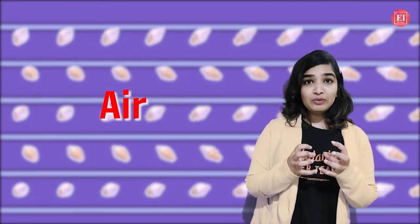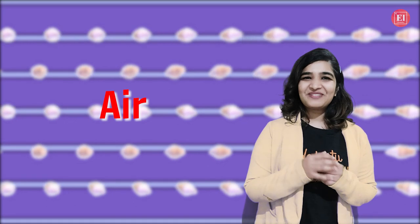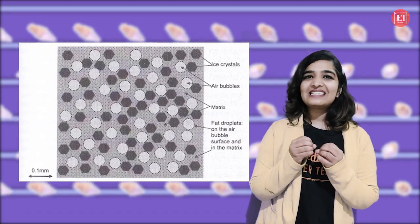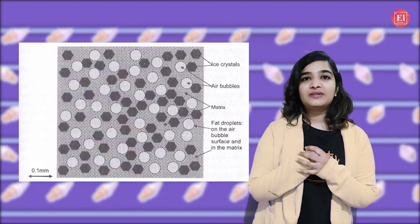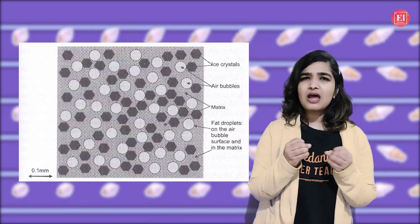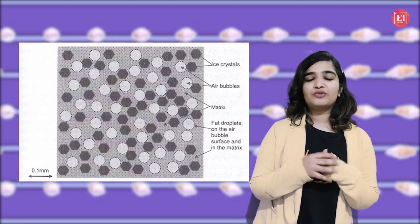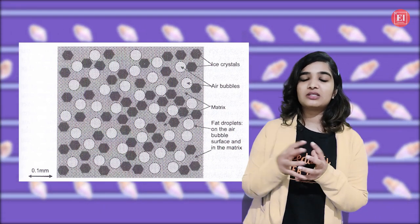The invisible and cheapest ingredient of ice cream is definitely air. The tiny air cells whipped into the base mix are largely responsible for the general consistency of ice cream, and of course will greatly affect the volume and the texture.